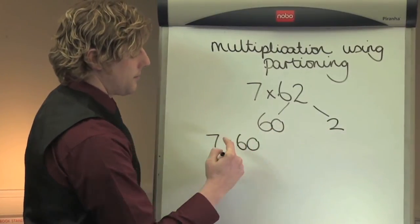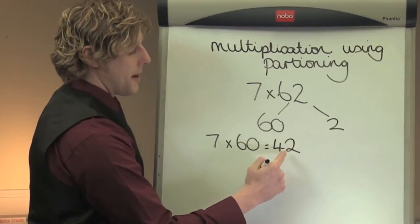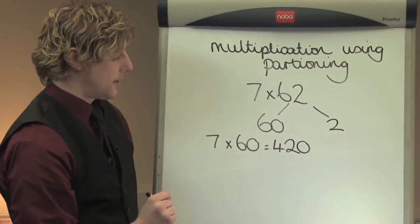7 times 60, 7 times 6 is 42, and make that number 10 times bigger, make it 420.